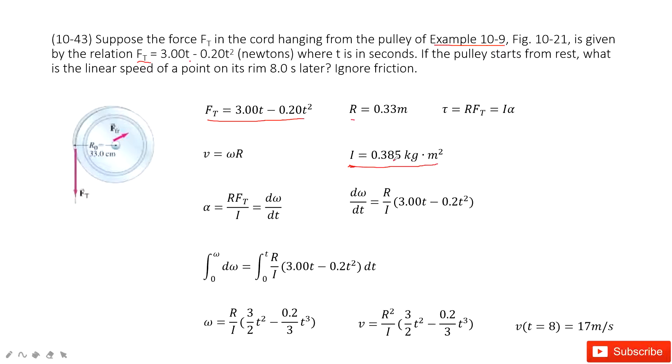And ask you to find the linear speed at the time t equal to 8 seconds. So the linear speed, the linear velocity for this pulley equals omega times r. So how can we connect them together? It looks like if we can find the angular velocity at t equal to 8, then we can find the linear speed at the time t equal to 8.